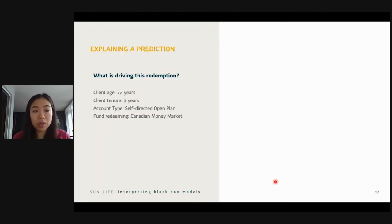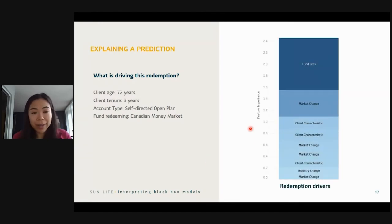But what I really like about SHAP is that you can also apply it to a prediction. So here we have an example of an instance, we have a client here, he's 72 years old, he's been investing with the company for three years, he has this type of account type, and he sold off a Canadian money market. And the model predicted that he would, and this is what SHAP said, or the reasons, the features that drove this prediction to say that this client was selling the fund. And the main, the top two, are fund fees. So again, lower fees, more likely to sell off a fund. And then something around the market also drove this prediction as well. And then it goes down from there to explain, to provide other features that help drive this prediction. But you can see the top two, those are the main top two that drove this prediction.